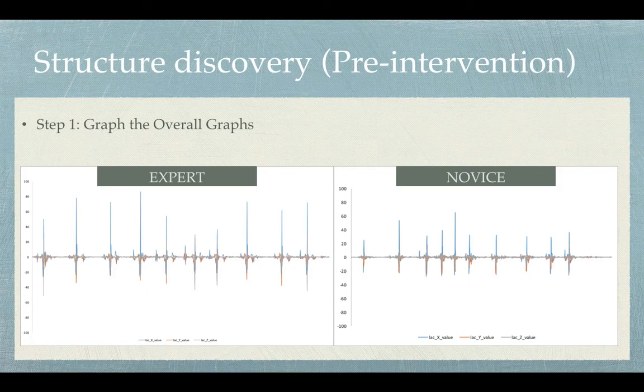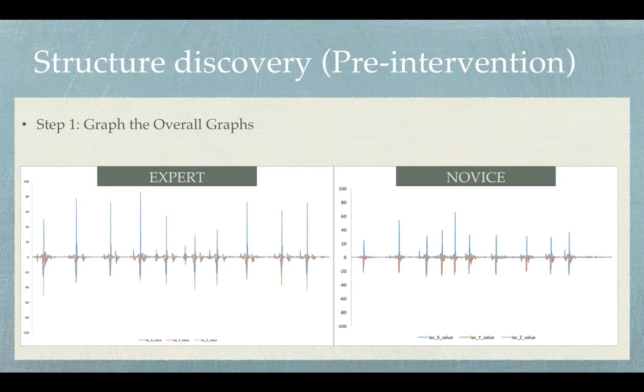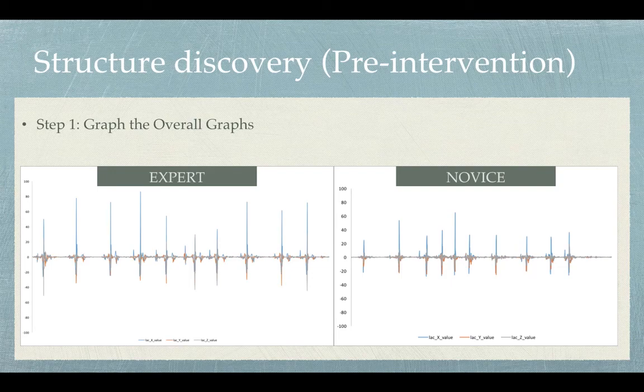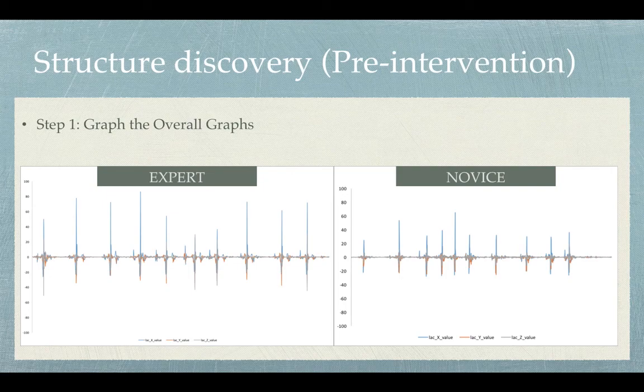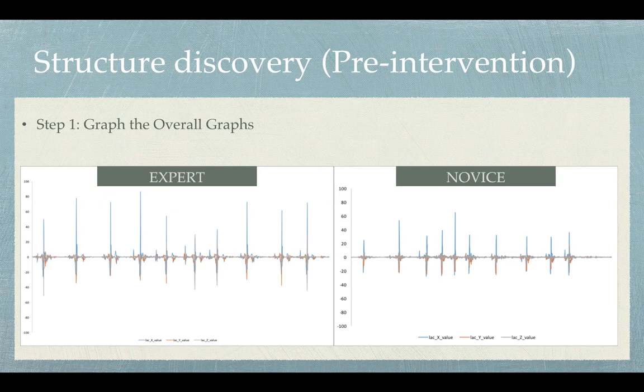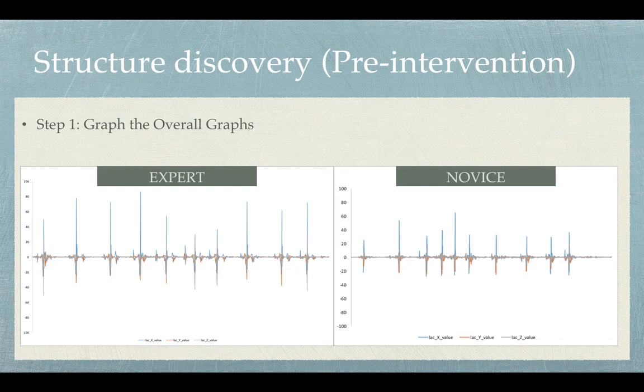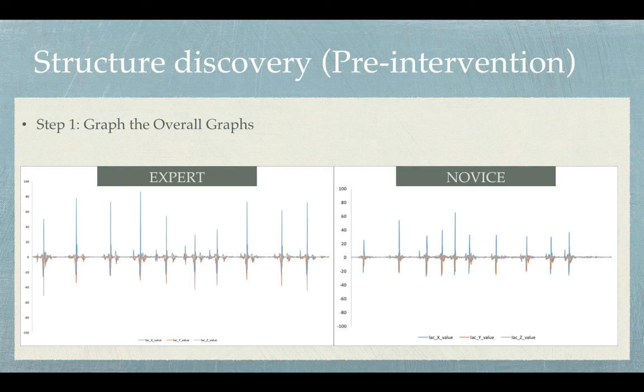For the first step of the discovery, we graph the overall graph for both the novice and expert. This graph represents the acceleration for all ten shots. Here you can see that the ten peaks in this graph represent the actual time when the person shoots. The blue represents the x value, the orange represents the y value, and the gray represents the z value. But as you can see here, there is a lot of noise, so we are not clear what value should be used. We decided to use more sophisticated analysis.